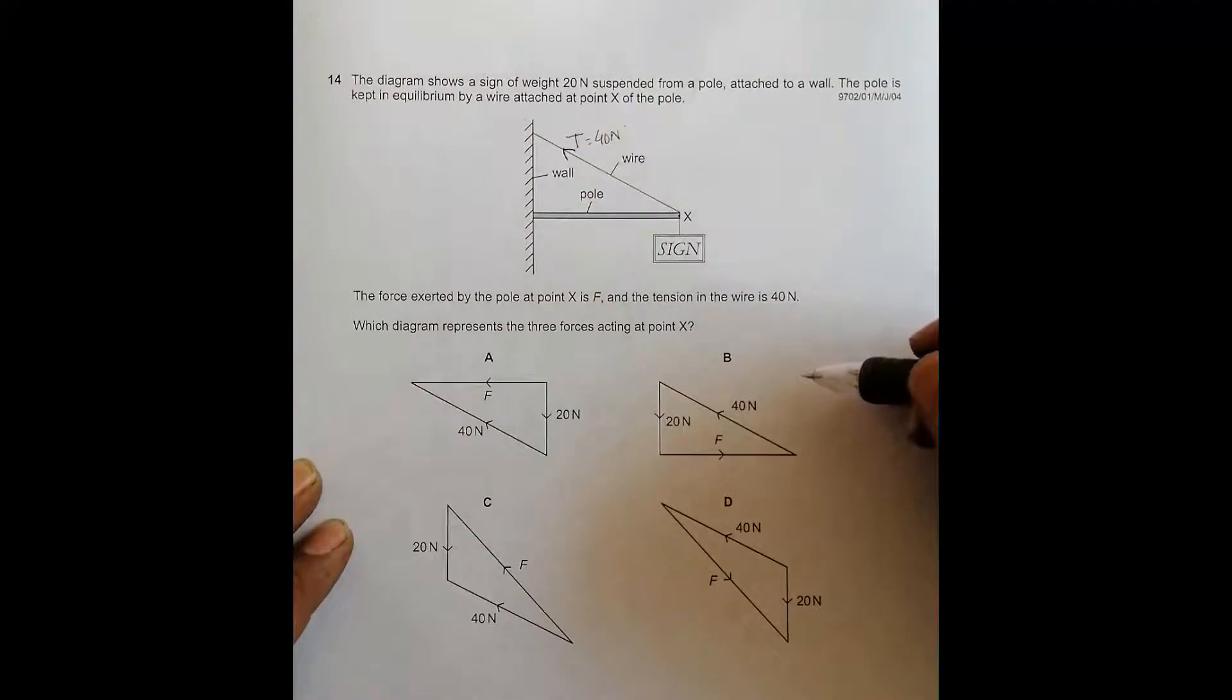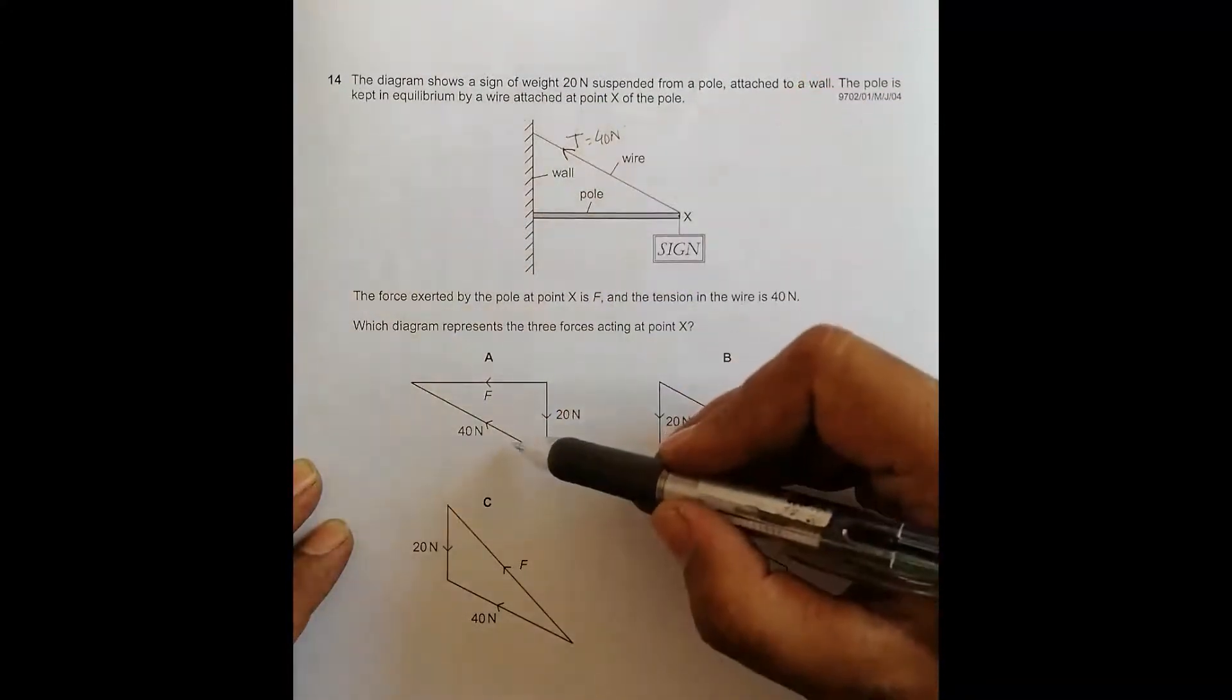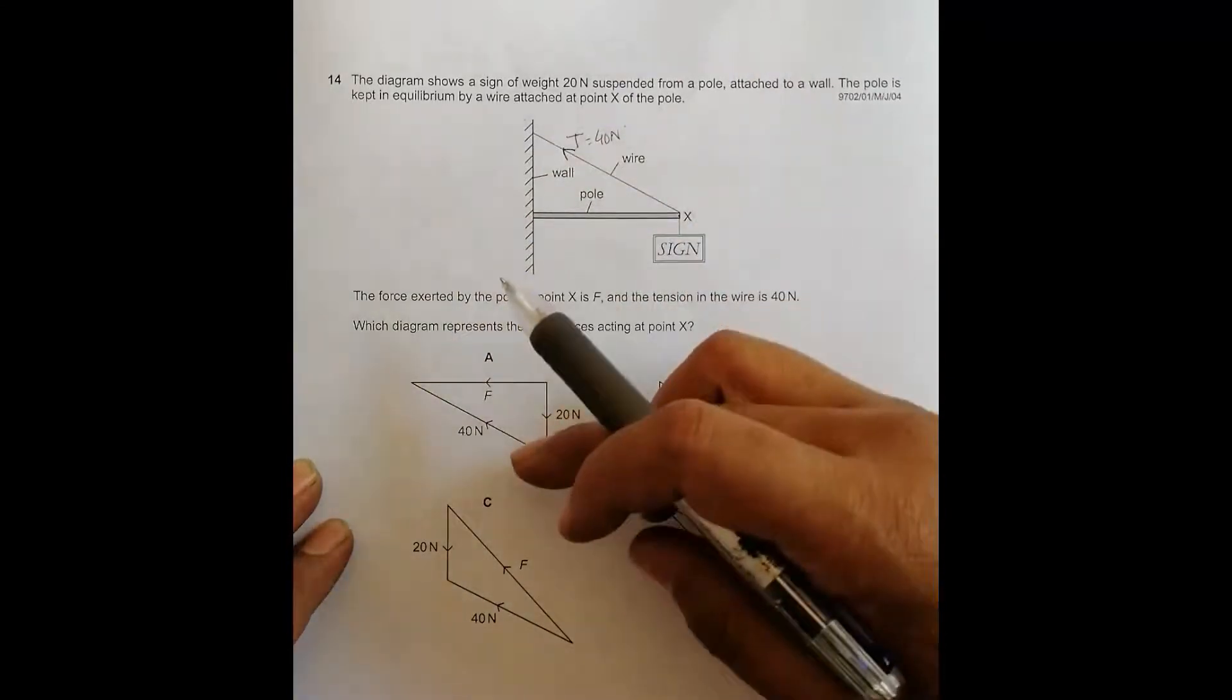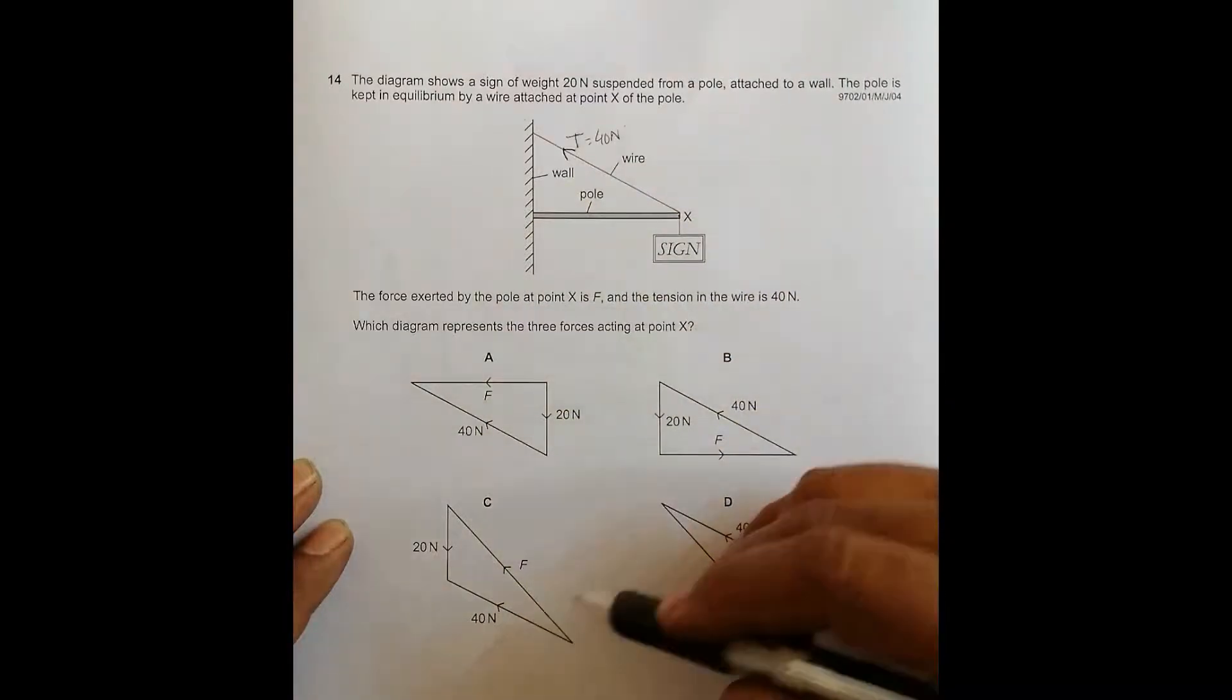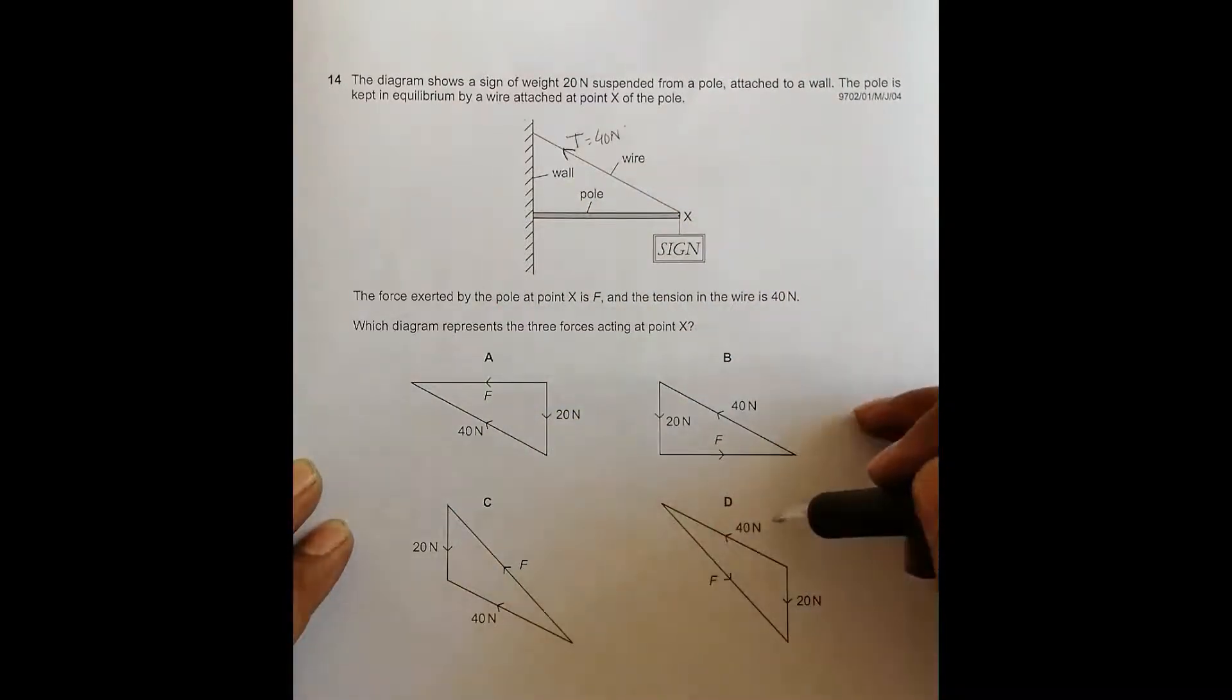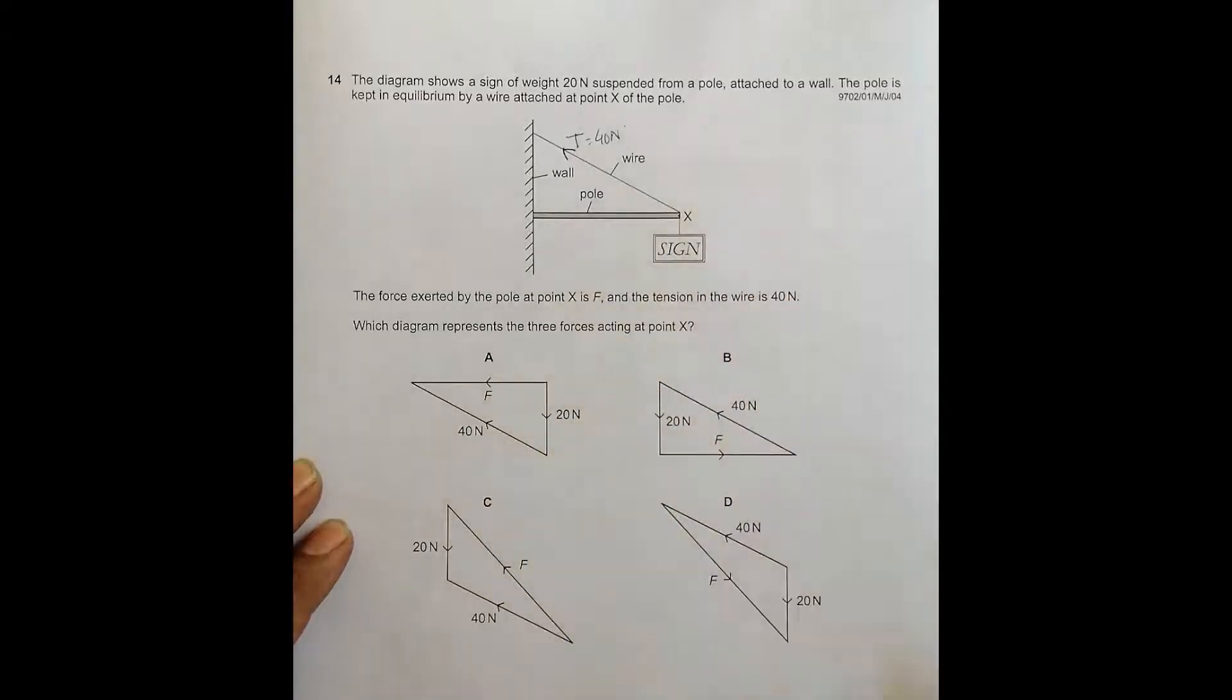If you look at the answer choices, this force is 40 Newton parallel to the wire, so it qualifies. This is also 40 Newton parallel to the wire, qualifies. All the 40 Newton forces have been represented correctly, so all of them are still viable choices.